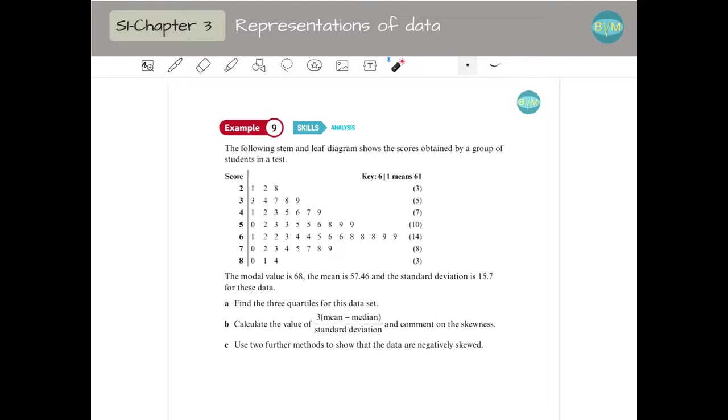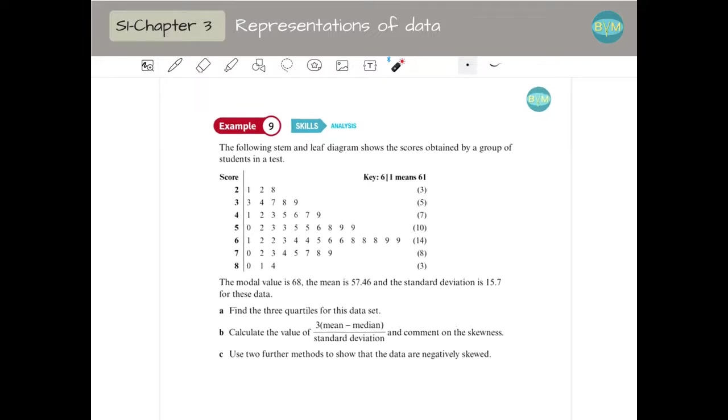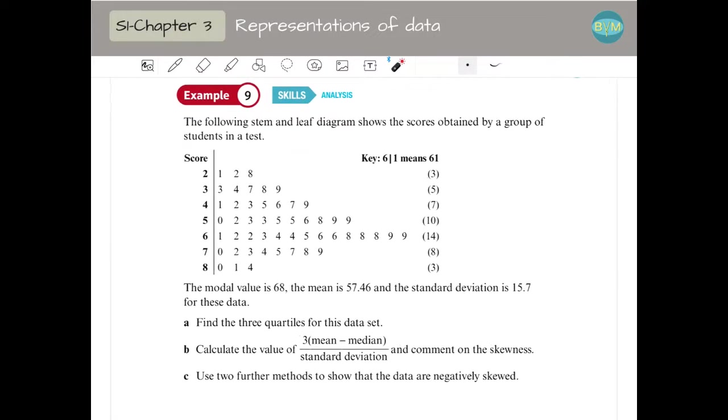So how does that look in a question? We have, for example, a stem and leaf diagram showing the scores of a group of students in a test. The key is 6|1 means 61, so the scores are 21, 22, 28 and so on. Modal value is 68, mean is 57.46, so they have saved us some work giving us those numbers, and the standard deviation is 15.7.